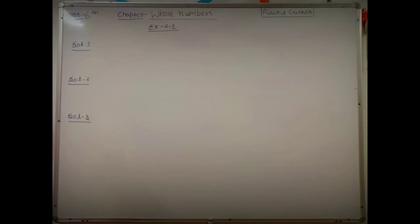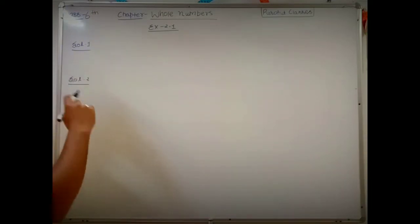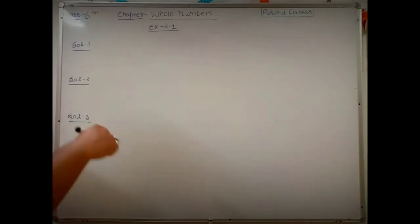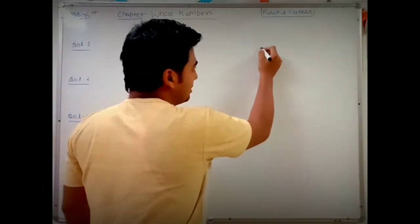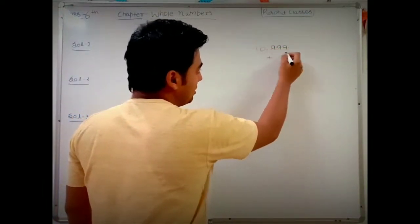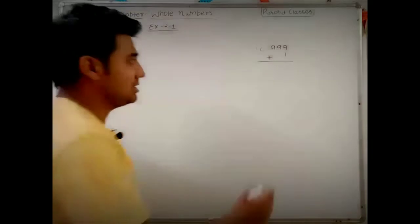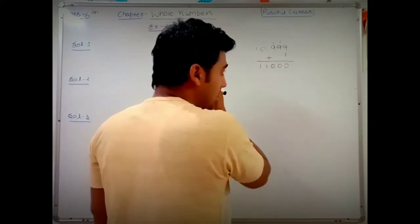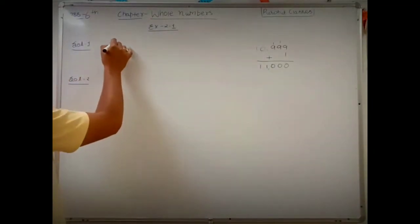Question 1 says: write the next three natural numbers after 10999. To write the next natural number, we add 1 to the given number. So 10999 plus 1: 9 plus 1 is 10, carry 1, giving us 11000. So the next number after 10999 is 11000.